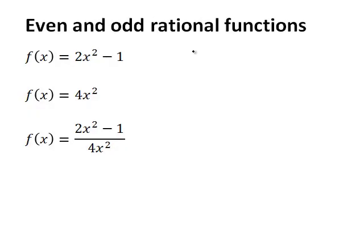Let's have a look at even and odd rational functions. A rational function is a function that's composed of a polynomial divided by another polynomial. So that means we could just look at the two polynomials and find out if they're even or odd, and that could help us determine if the whole rational function is even or odd.